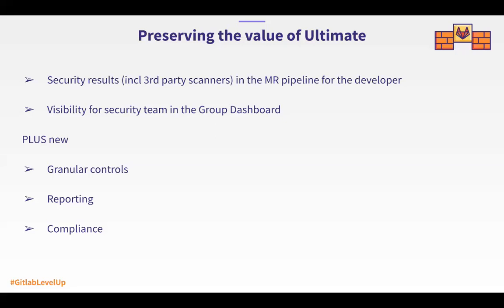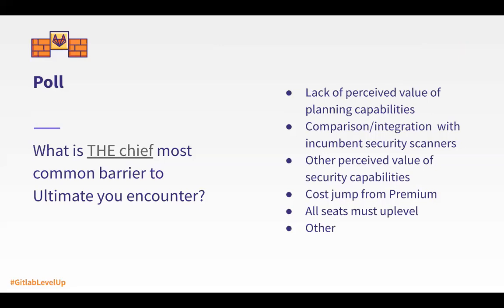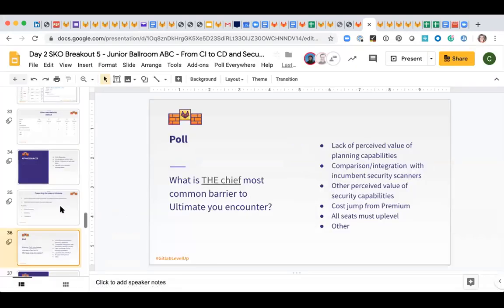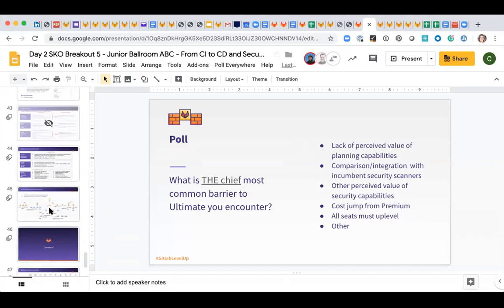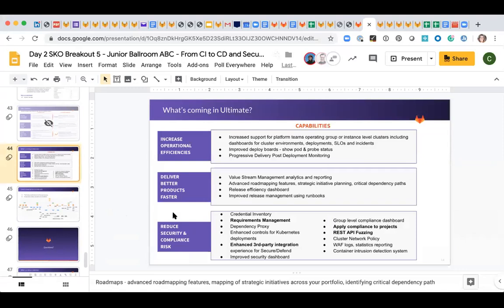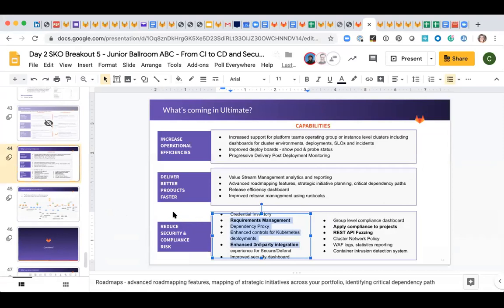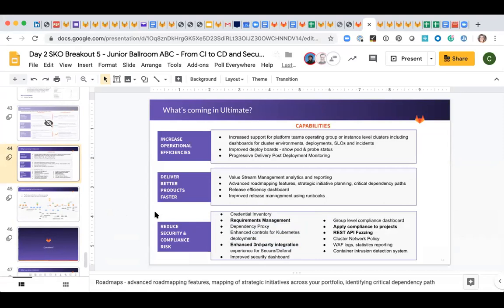On the ultimate side, the intent is to keep the MR pipeline for the developer and the dashboard in ultimate, even as we shift SAST and some other scanners into lower tiers. The PMs are putting together a page giving you more information about what's being retained in ultimate so you have a better sense of the value we bring. It goes back to the workflow — it's not wrapped up in the scanners themselves. You can put in our scanner or somebody else's scanner; it doesn't matter. The workflow is what's really important.